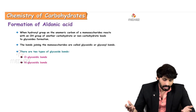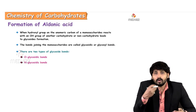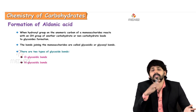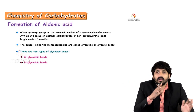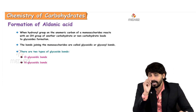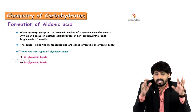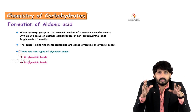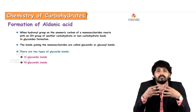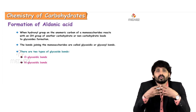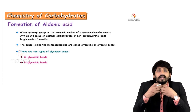Aldonic acids. When the hydroxyl group at the anomeric carbon of a monosaccharide reacts with a hydroxyl group of another carbohydrate or non-carbohydrate, it leads to glycoside formation. Glycosidic formation is very important because monosaccharides are single sugar units, and disaccharides are two sugar units joined together by glycosidic linkage — it is only possible this way.